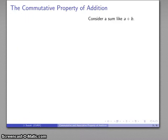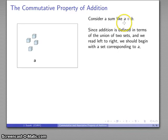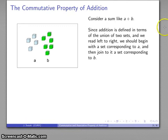Let's take a closer look. Consider the commutative property of addition. We're going to consider a sum like a plus b. Since addition is defined in terms of the union of two sets, and since we read from left to right, what this tells us is that we're going to take a set of a, and we're going to drop down, add to that, a set corresponding to b. And I'm going to put those together, and this combined set here is going to represent my sum a plus b.